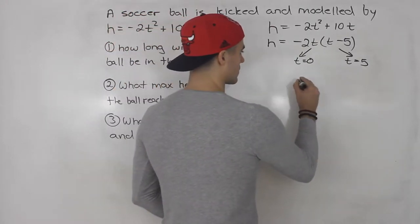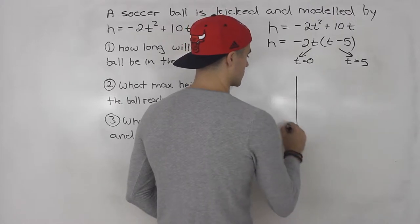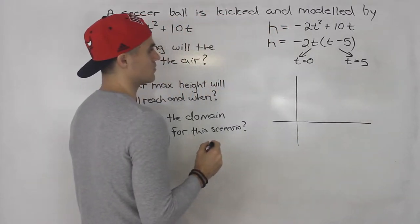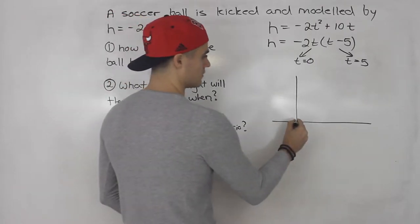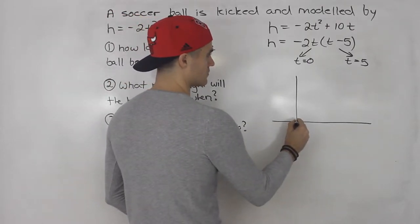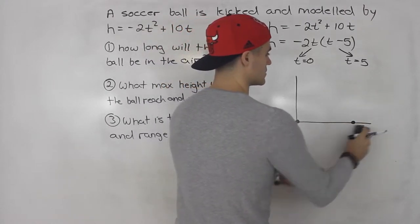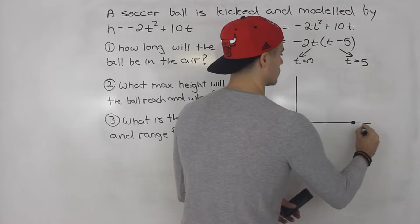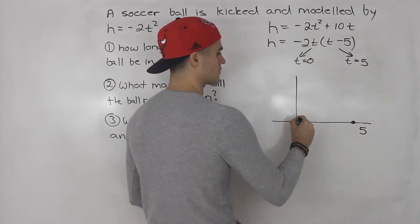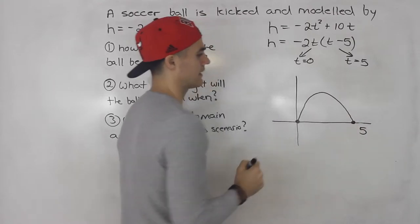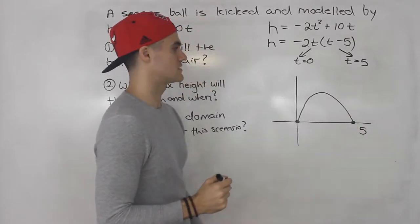Okay, so from here, we can draw a graph. So intercept is 0, which is here at the origin, and then the other intercept is 5.